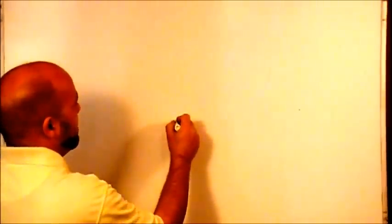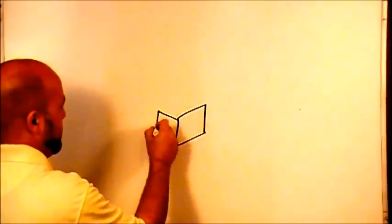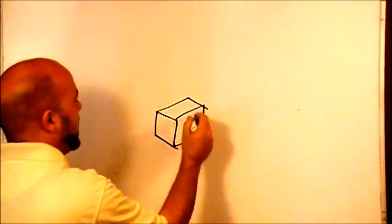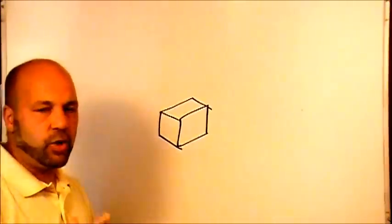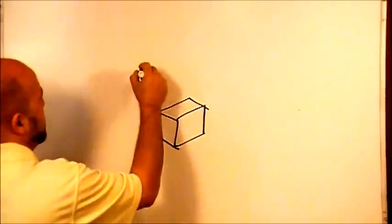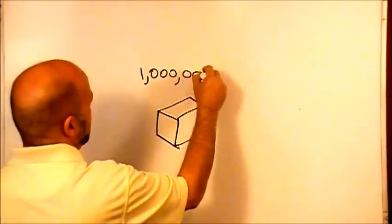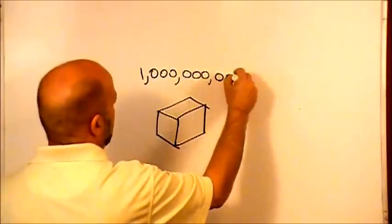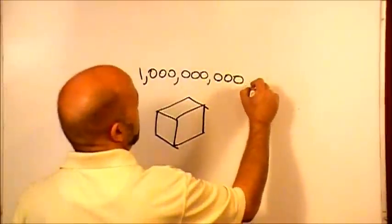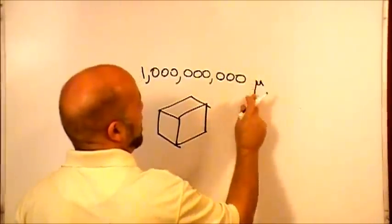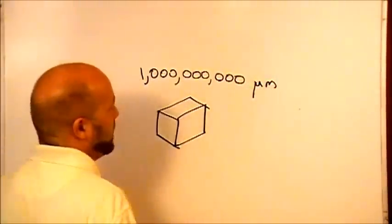Here's our BCM again. Let's write out a billion cubic microns numerically. So we've got one, and there's nine zeros in a billion.